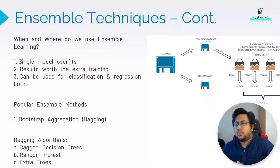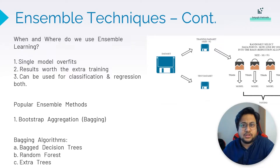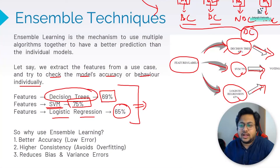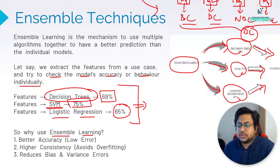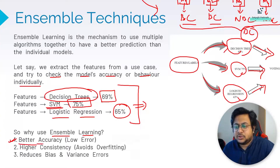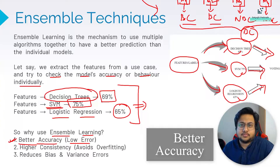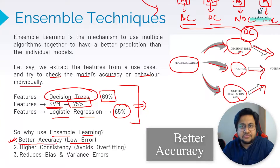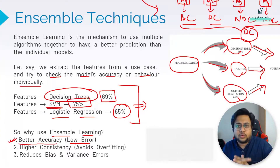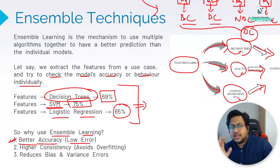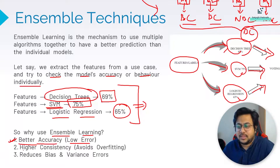There are two major concepts in ensemble techniques, but first let's understand why we use ensemble learning. The first reason is better accuracy or lower error — ensemble learning will give better results compared to standalone models in at least 80–90% of cases. The second reason is higher consistency because it avoids overfitting.